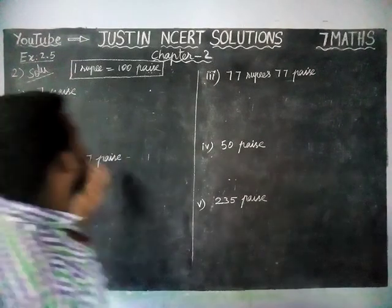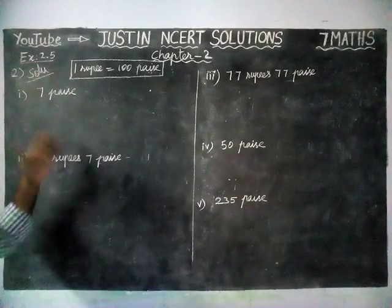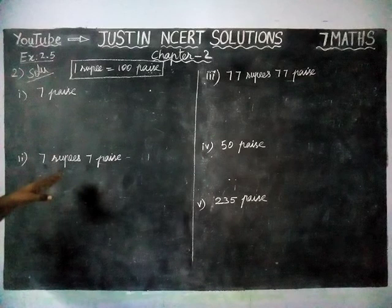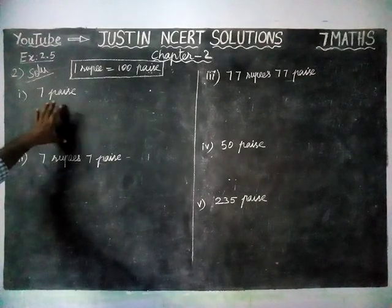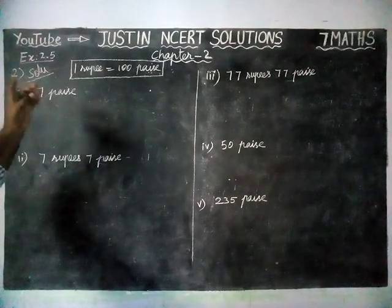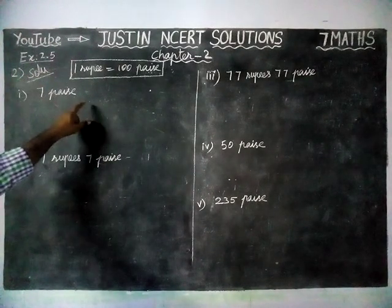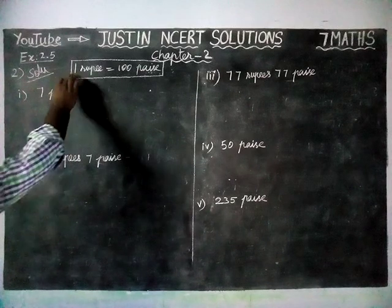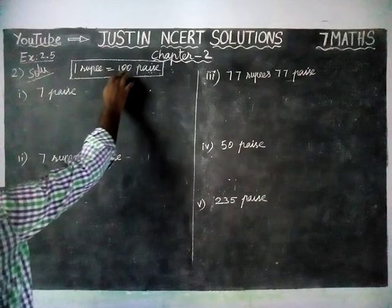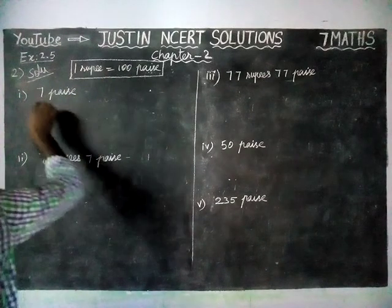Here, they have given rupees and paise. In words, we have to convert this into decimal as a number. Now, 1 rupee is equal to 100 paise.